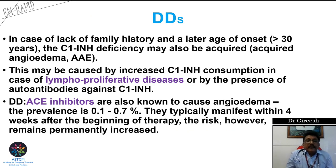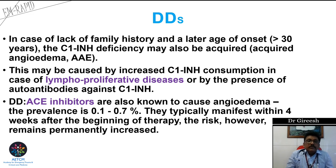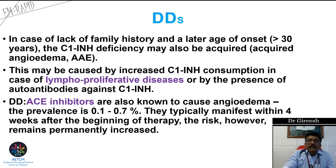An important differential to remember is that ACE inhibitors can produce angioedema. Many patients started on ACE inhibitors for hypertension or heart disease may present with angioedema, and stopping the drug is critical. Lymphoproliferative disorders can also produce acquired C1 esterase inhibitor deficiency or reduced C1 inhibitor function.